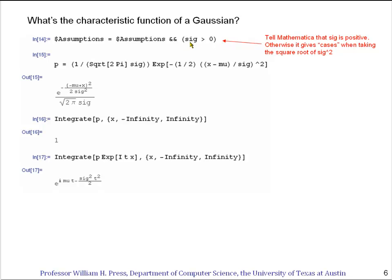Often when we have something like a standard deviation, we have to tell Mathematica that it's going to be positive. And the way to do that once and for all is you add to this hidden variable assumptions the logical construct and then the assumption that you want.